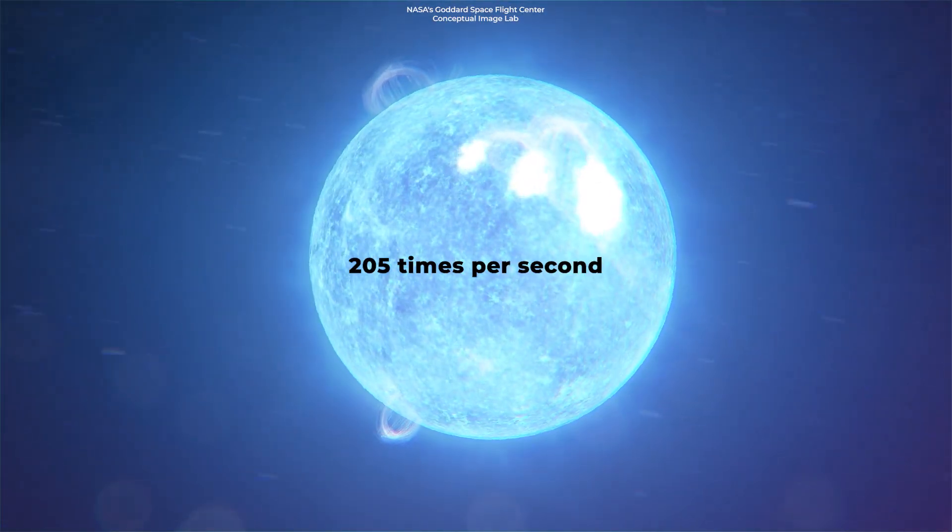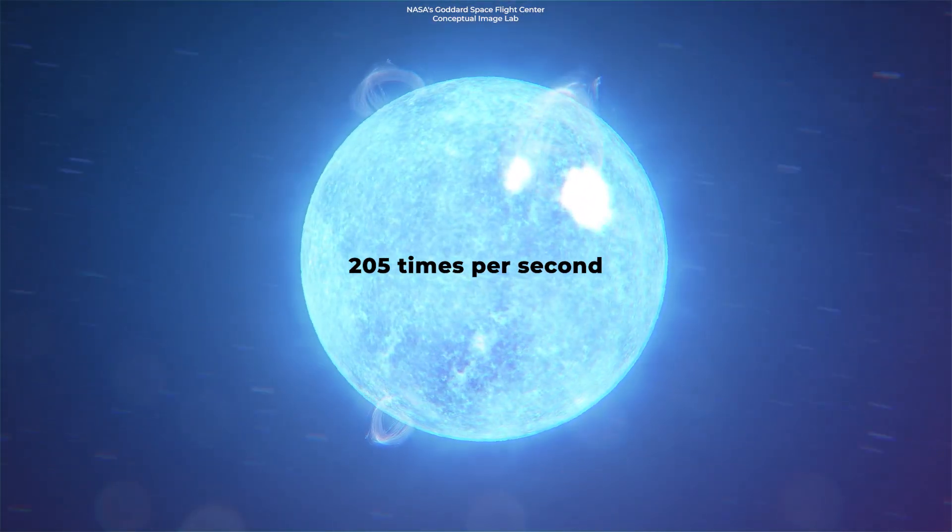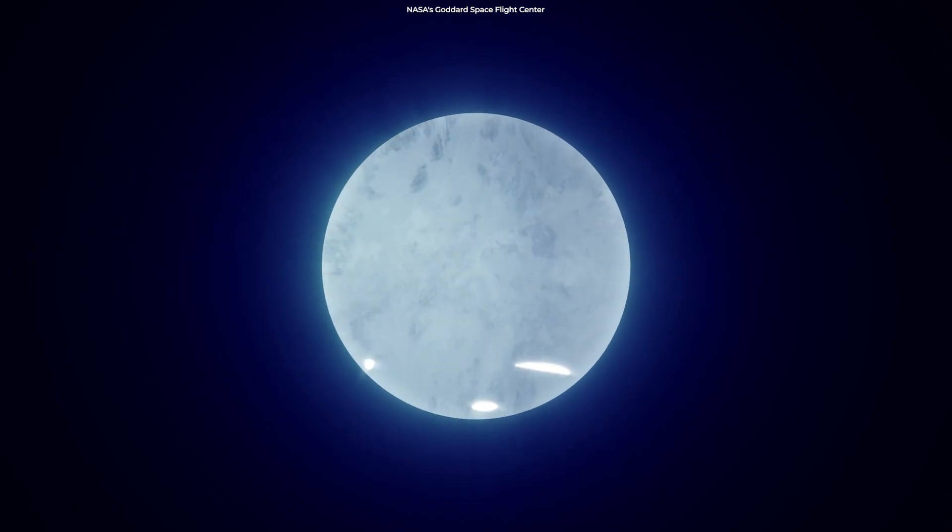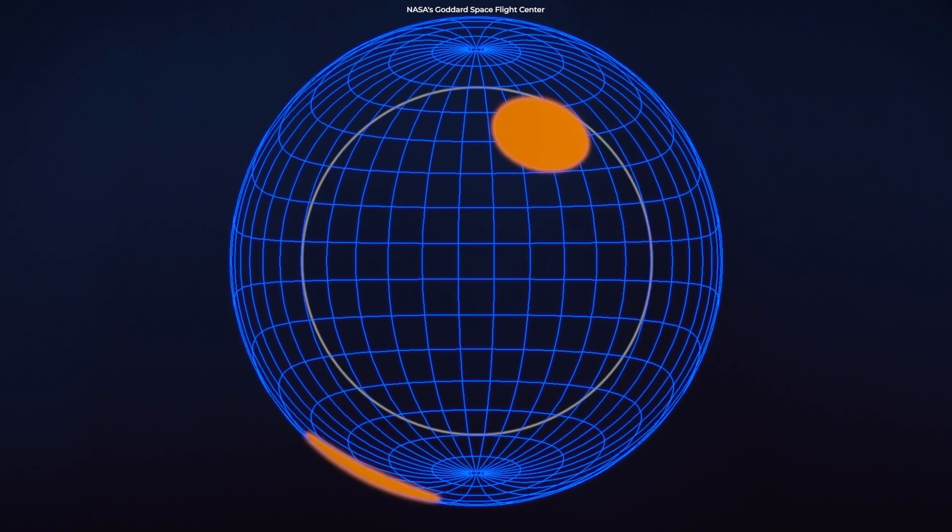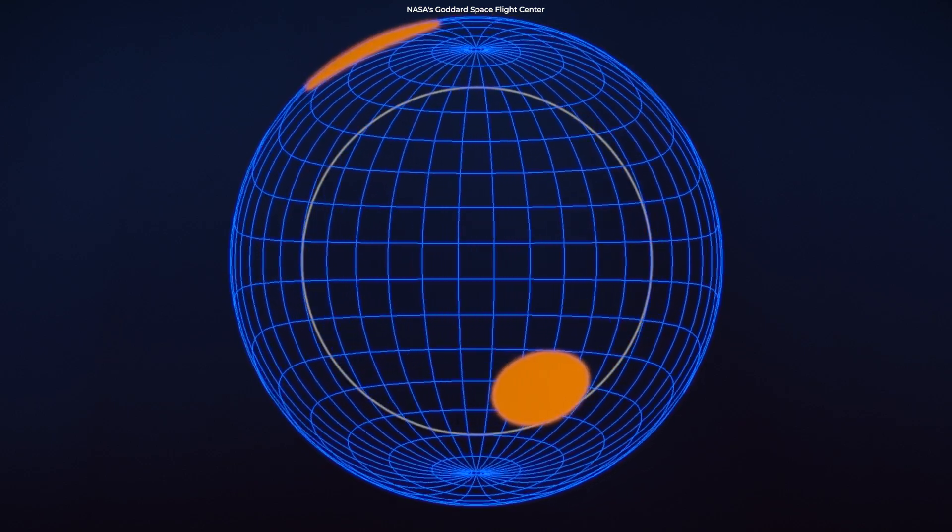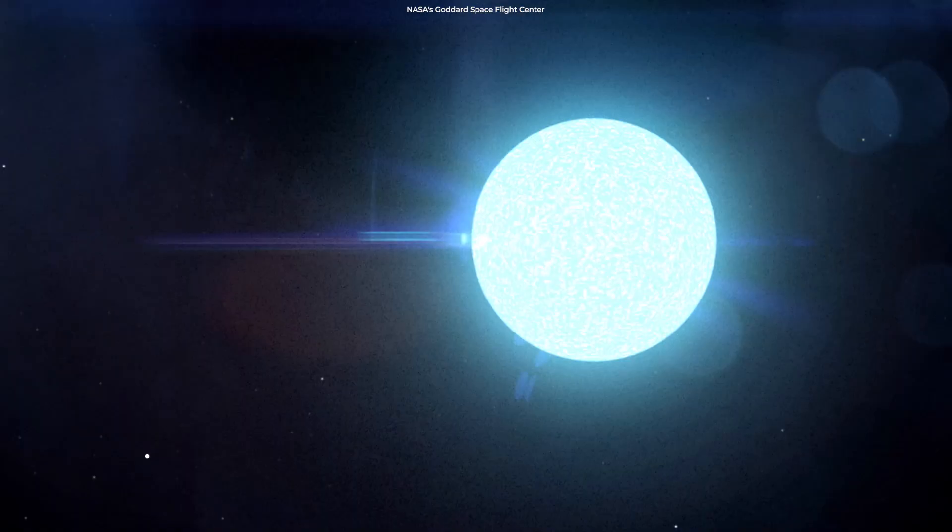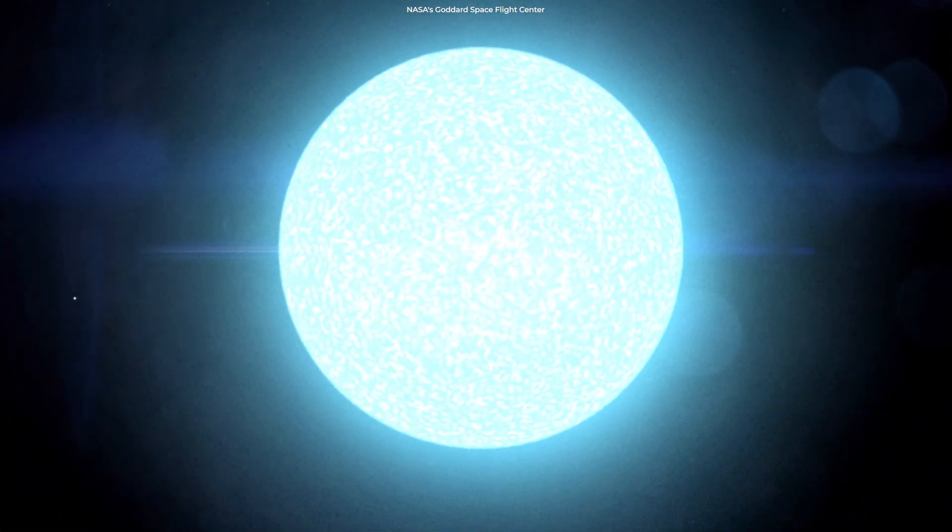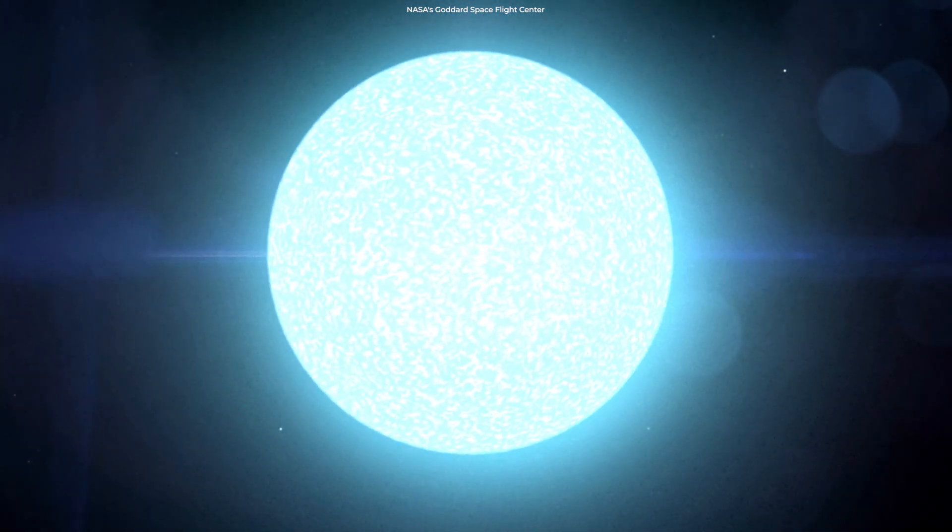J0030 revolves 205 times per second. What's interesting about this study, however, is the unexpected location of J0030's hotspots. So far, we have known that these beams of radiation are fired from two hotspots at the magnetic poles, thus resulting in the whole pulsar to glow faintly in X-rays, although the hotspots are brighter.